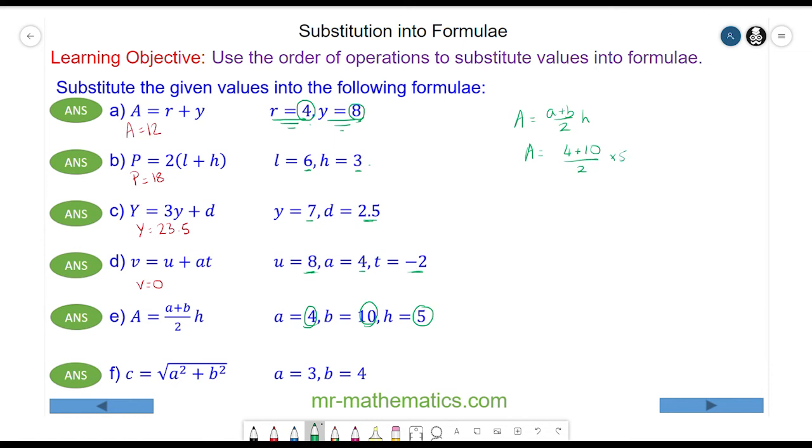So A will equal 4 plus 10 divided by 2 multiplied by 5. To make this clear, I'm going to do the numerator first, then I will do the division, then I'll do the multiplication. So A equals 4 plus 10, which is 14, divided by 2 times 5.